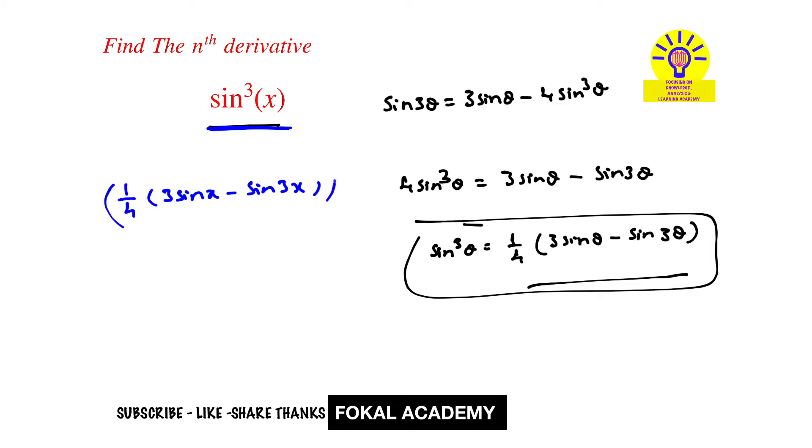Now we want nth derivative of this function. So from this we get 1 by 4th of, now apply nth derivative for these two terms, then becomes 3 into nth derivative of sin x minus nth derivative of sin 3x. Now observe here, these are in the standard forms we know that...